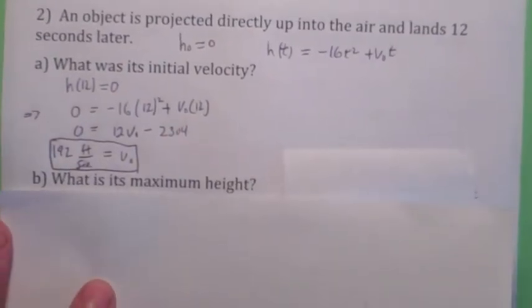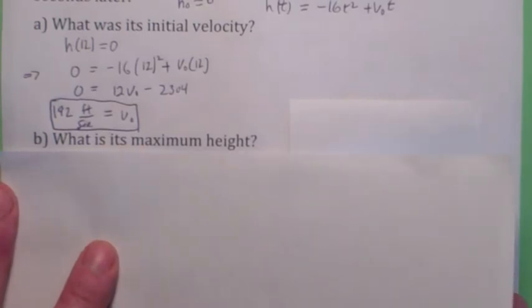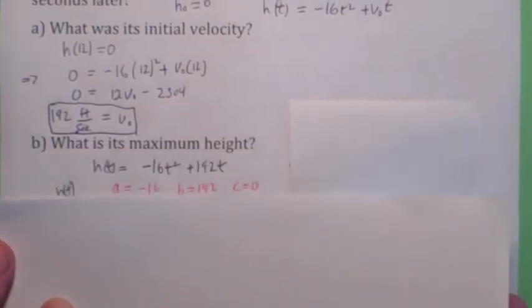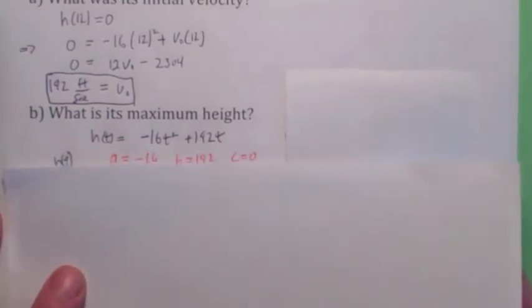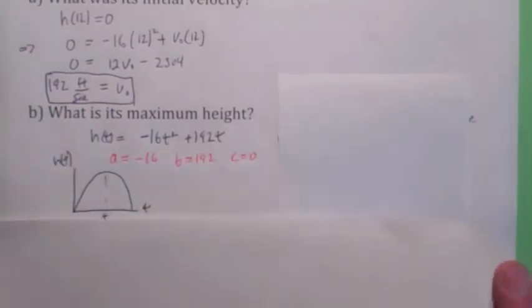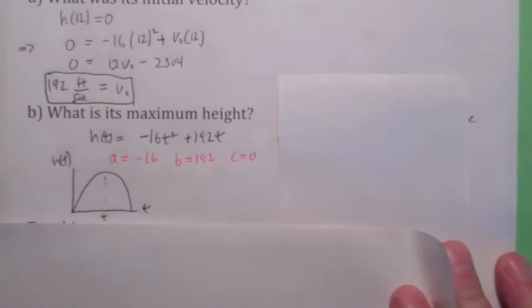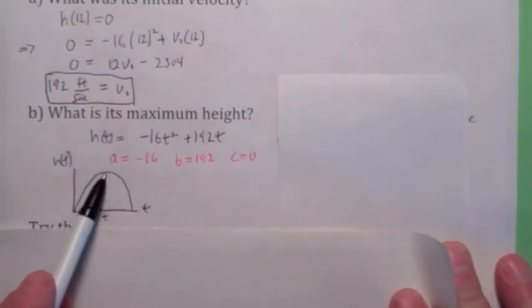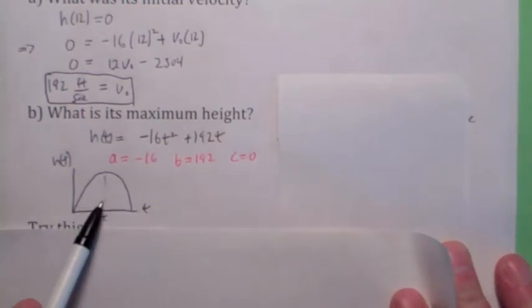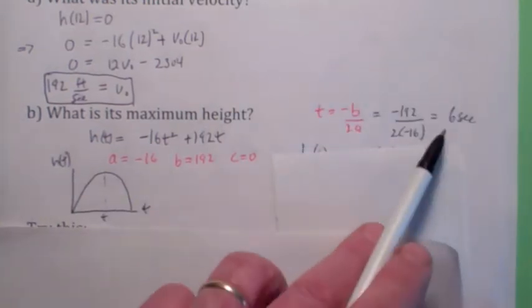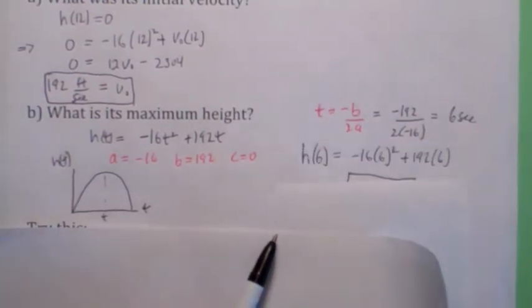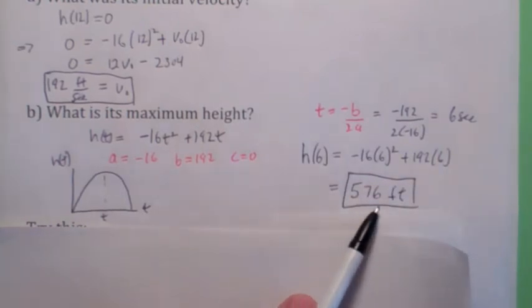Pretty cool. Second question, what is the maximum height? Well, you understand, of course, now that we know v₀, we know everything there is to know about this function. The maximum height, you would make sure you understand what's going on here. The maximum height is actually the second coordinate of the vertex. We're going to find t as negative b over 2a, which is 6 seconds. And then we're going to plug that into the function to actually find the maximum height, which is 576 feet.